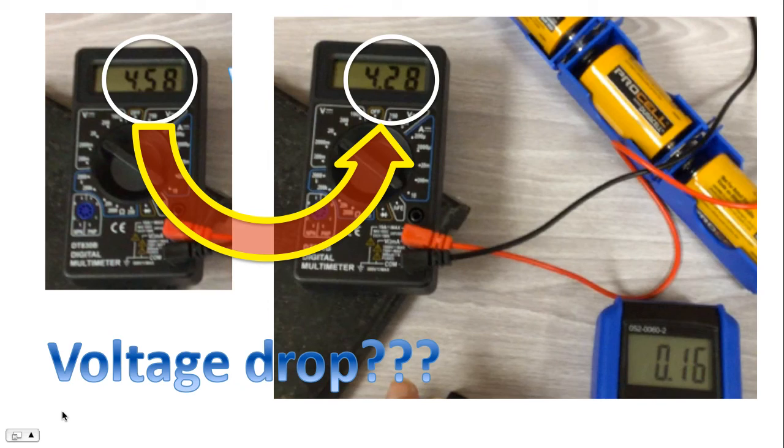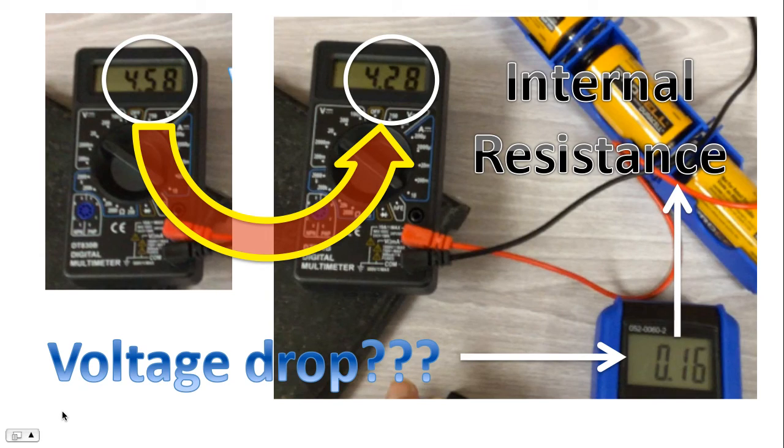Now, before we continue the experiment, you may have noticed that the voltage dropped significantly. Prior to turning on the motor, it was 4.58 volts. But then, while the experiment was running, it was only 4.28 volts. So the question is, why is there this voltage drop? Well, the problem is the current itself and the internal resistance of the batteries. Every battery has some internal resistance. As the current increases, the effect of the internal resistance on the overall voltage increases. So the more current there is, the greater drop in voltage there will be due to the internal resistance. Here we have a drop of around 0.3 volts. This happens because of the internal resistance of the battery.